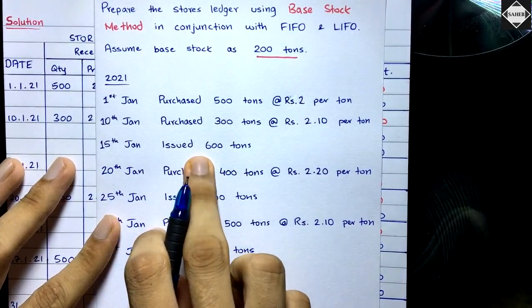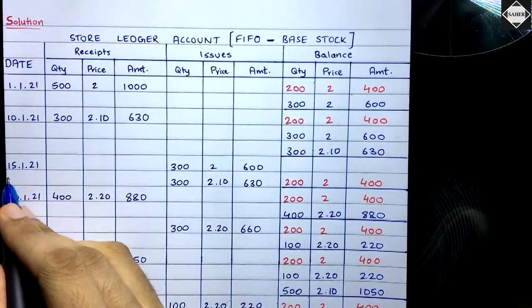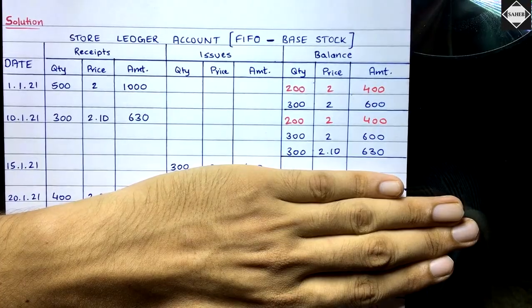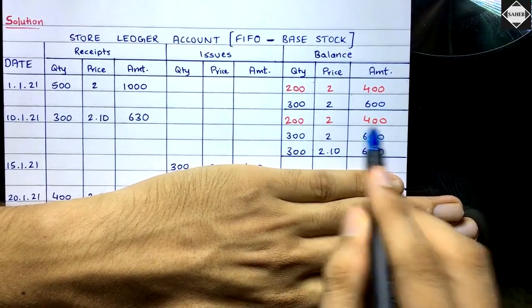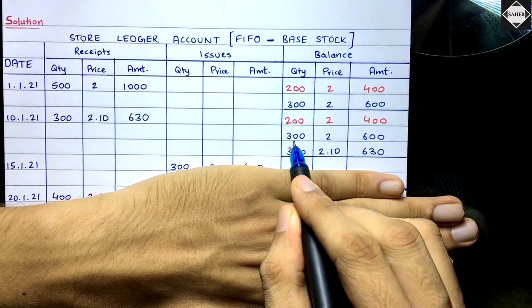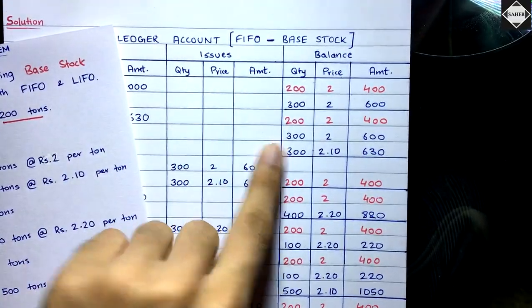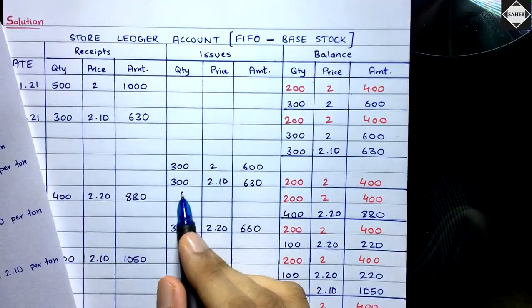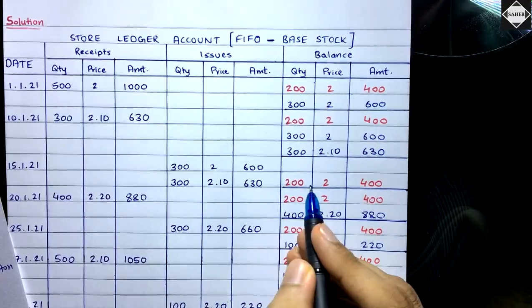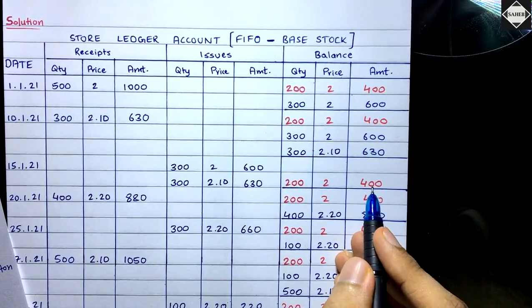On 15th January, we issued 600 tons. In FIFO (first in, first out), we cannot touch the red ink base stock. So we take the next lot first: 300 × ₹2 = ₹600, then the next lot 300 × ₹2.10 = ₹630 — sending out all the free quantities. What's left is only the base stock: 200 × ₹2 = ₹400.